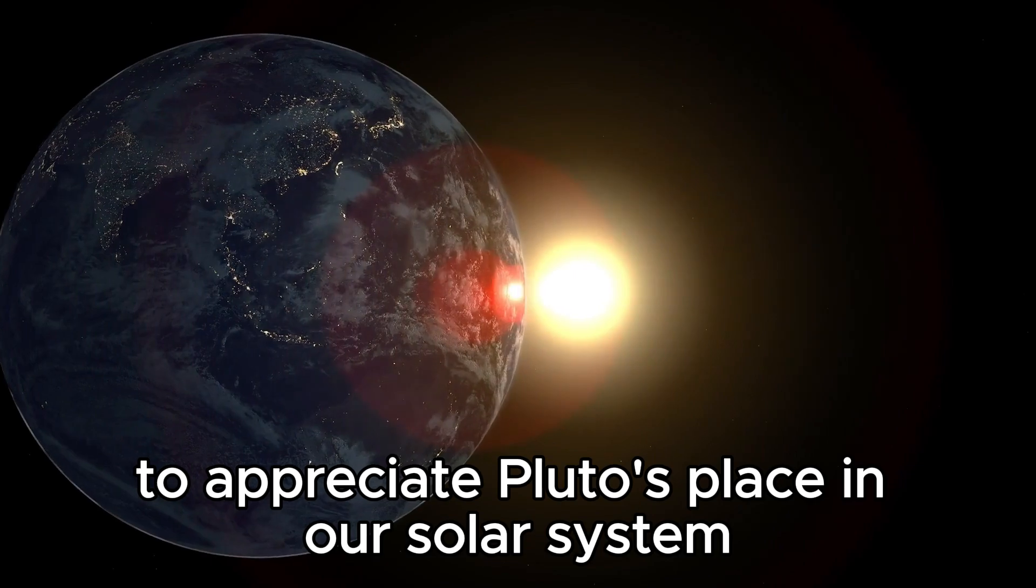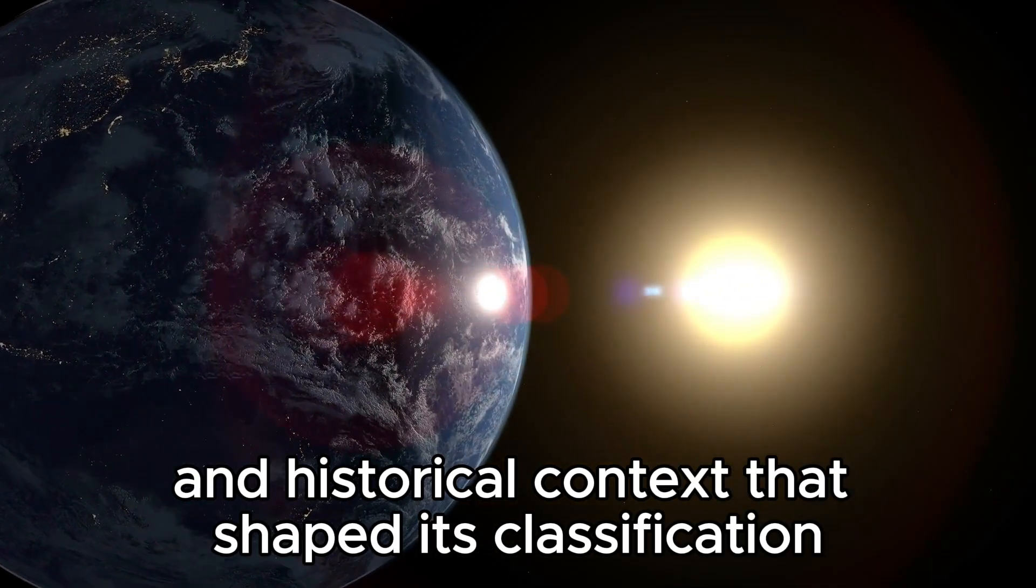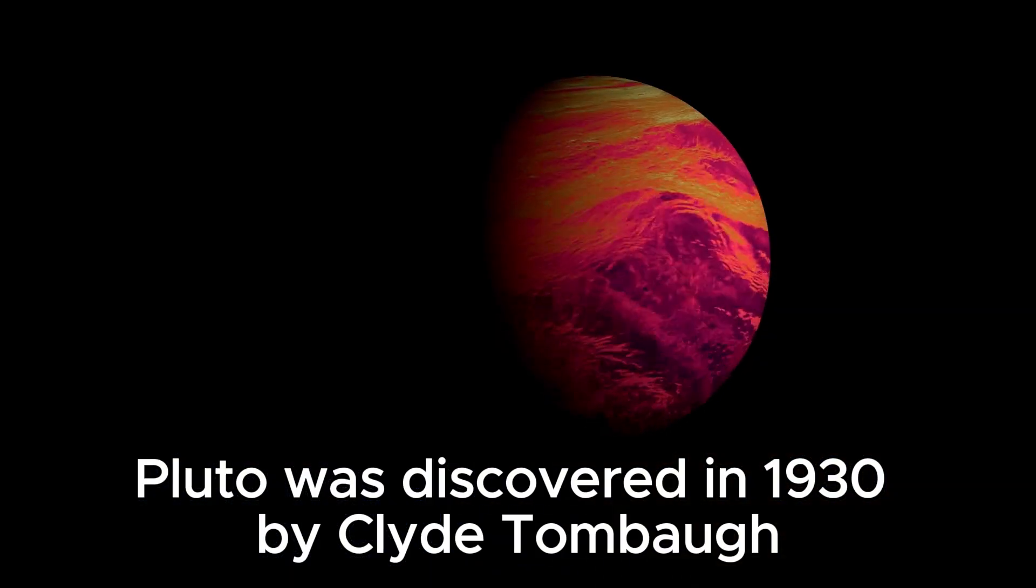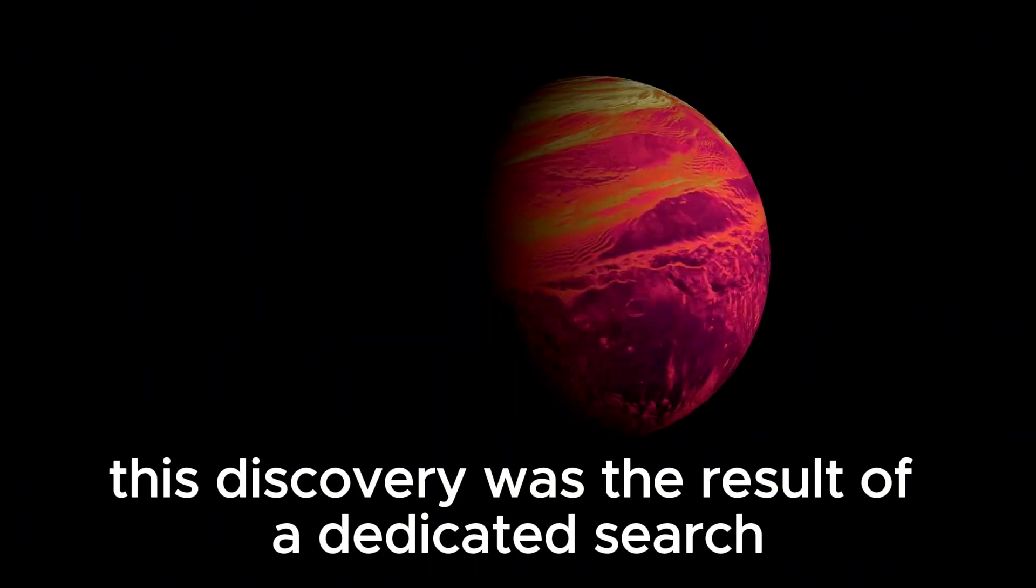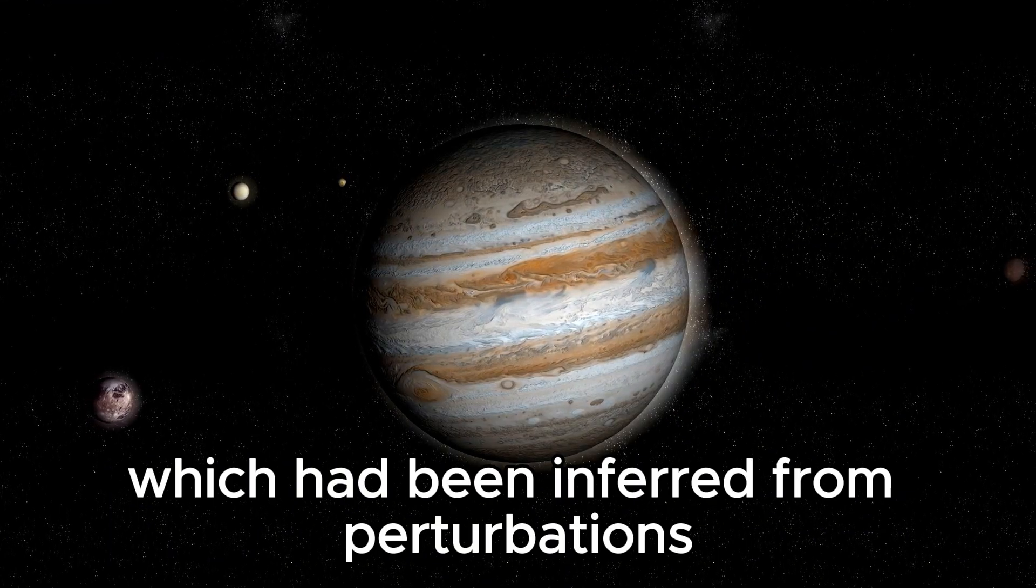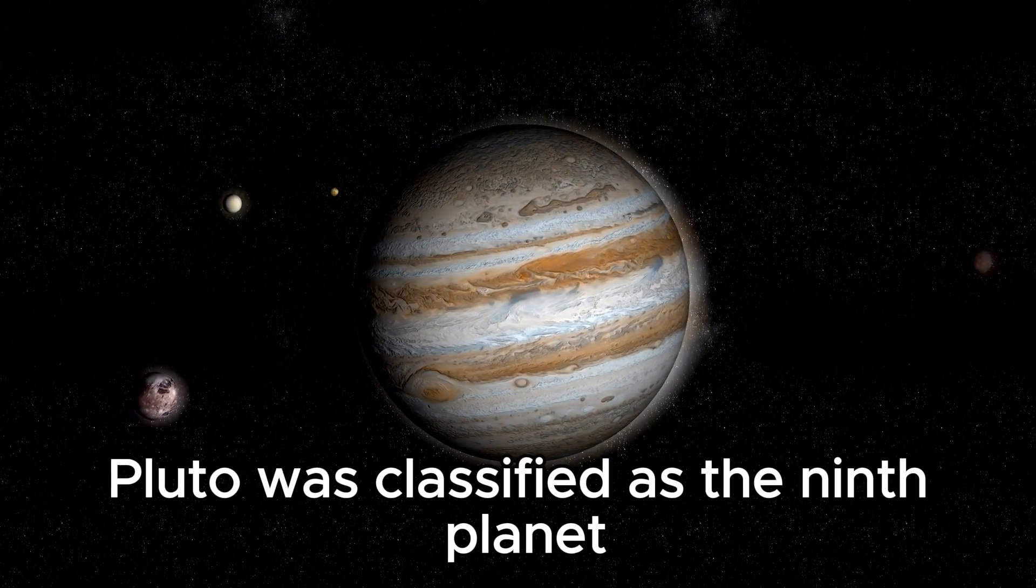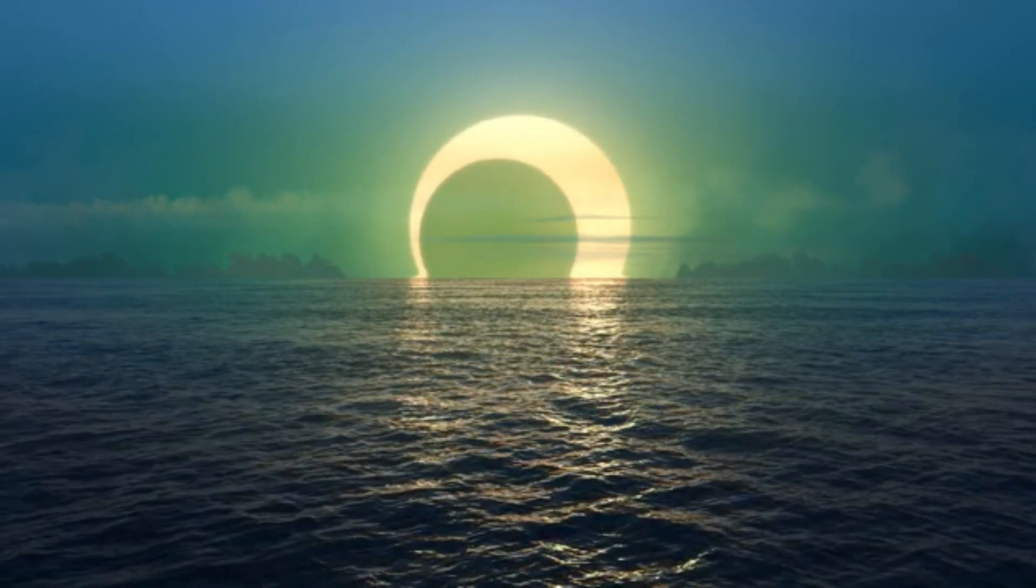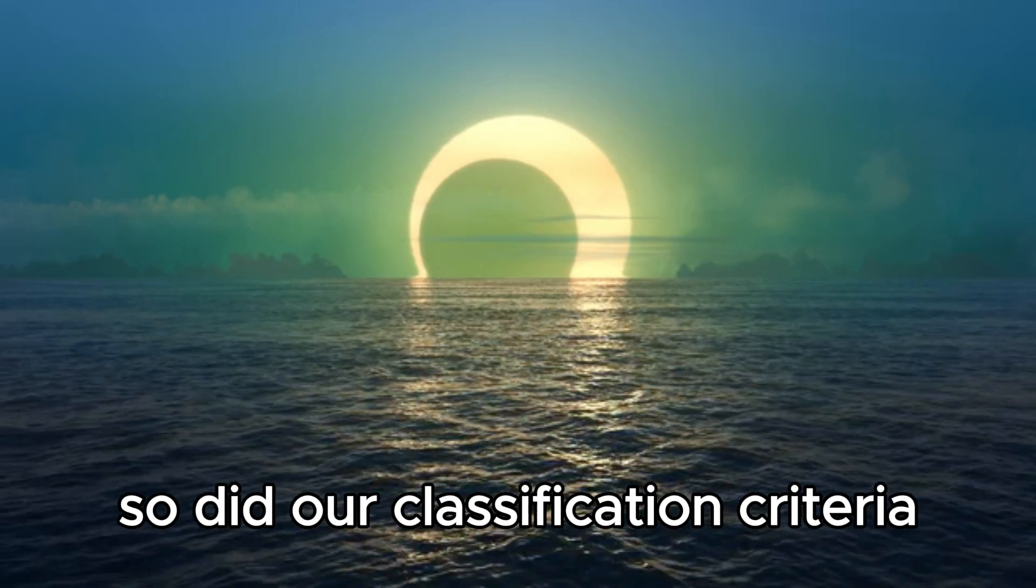To appreciate Pluto's place in our solar system, it's essential to understand its discovery and the historical context that shaped its classification. Pluto was discovered in 1930 by Clyde Tombaugh at the Lowell Observatory in Arizona. This discovery was the result of a dedicated search for a hypothetical ninth planet, which had been inferred from perturbations in the orbits of Uranus and Neptune. Initially, Pluto was classified as the ninth planet, a position it held for 76 years. However, as our understanding of the solar system evolved, so did our classification criteria.